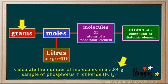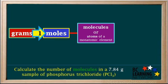In this problem, we're given grams and we're asked to find the number of molecules. In going from grams to molecules, our first step is to go from grams to moles, and our second step is to go from moles to molecules.